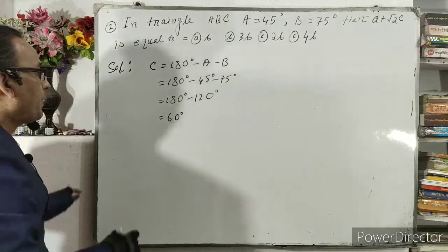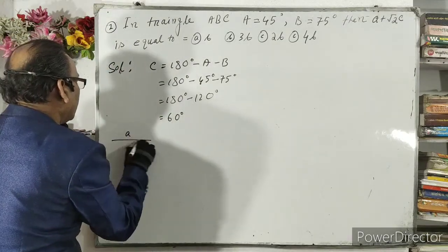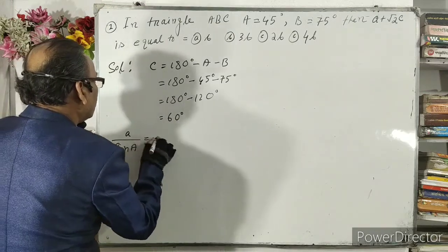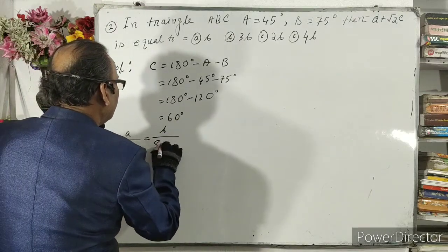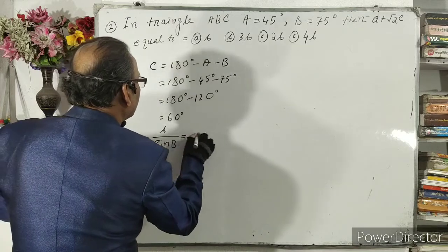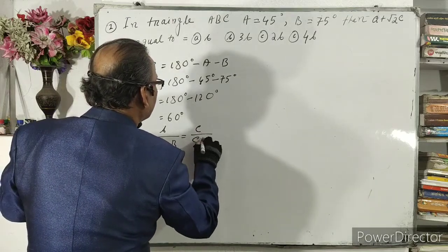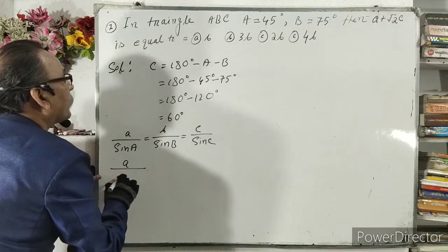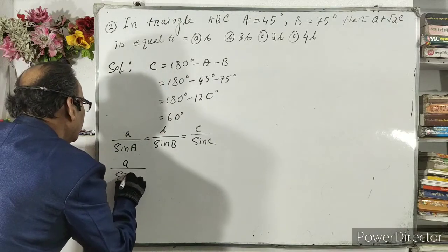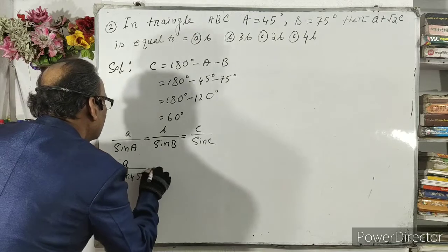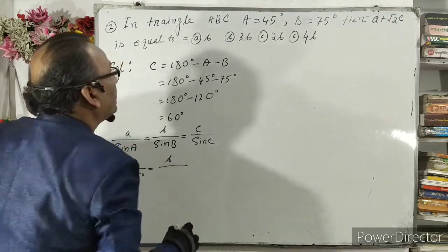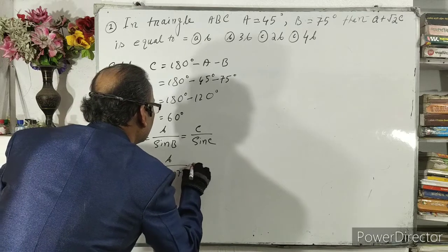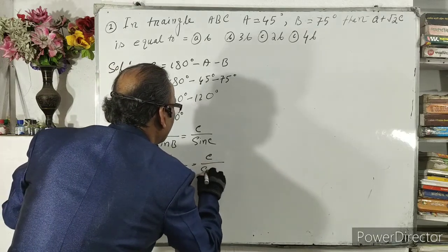So let's look at this formula. A by sin A, B by sin B, C by sin C. A by sin A, sin 45 degree. B by sin 55 degree. C by sin 60 degree.